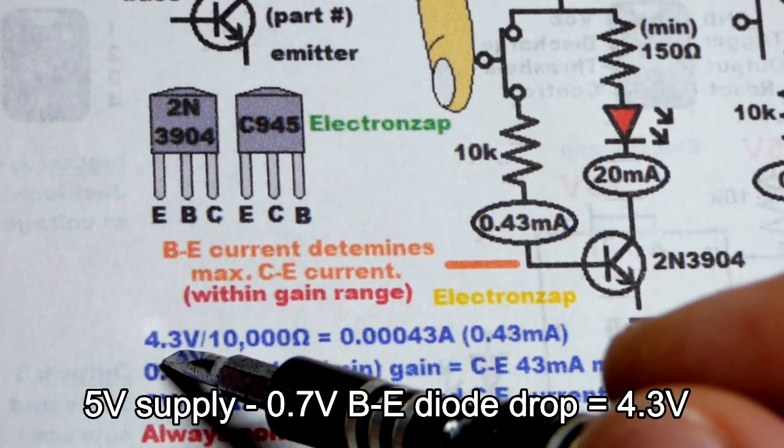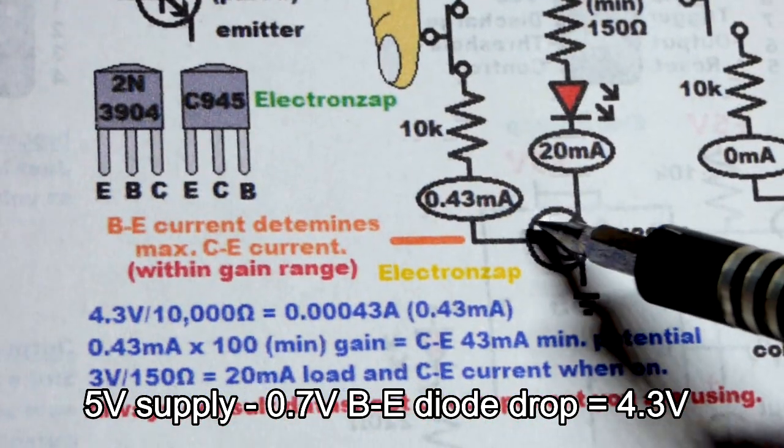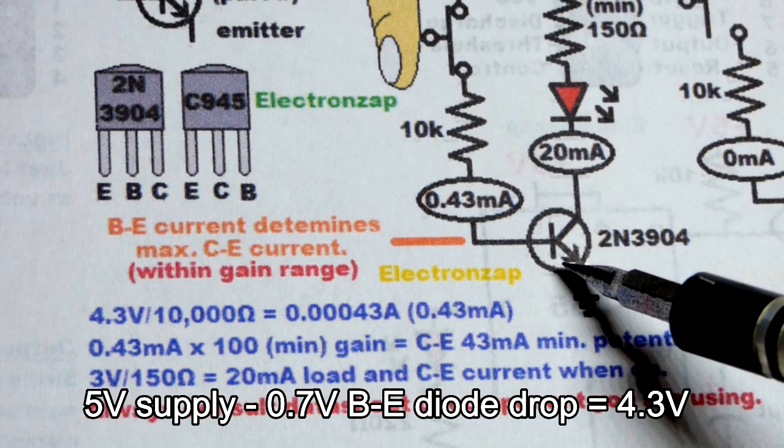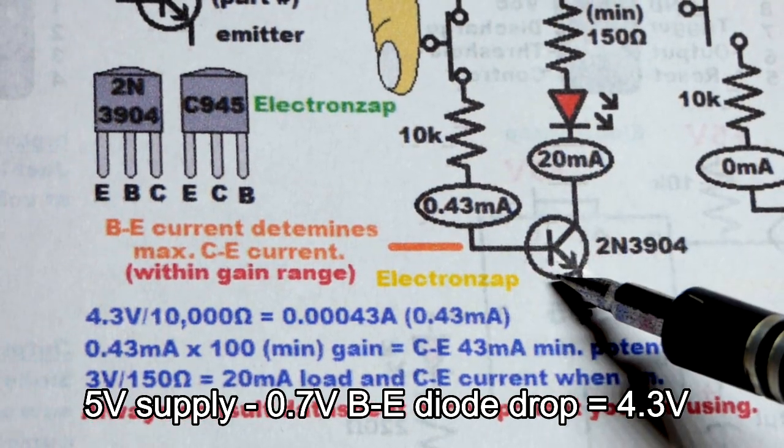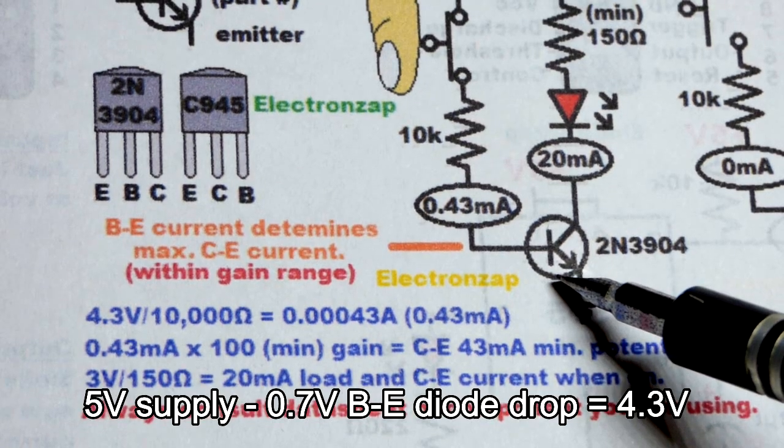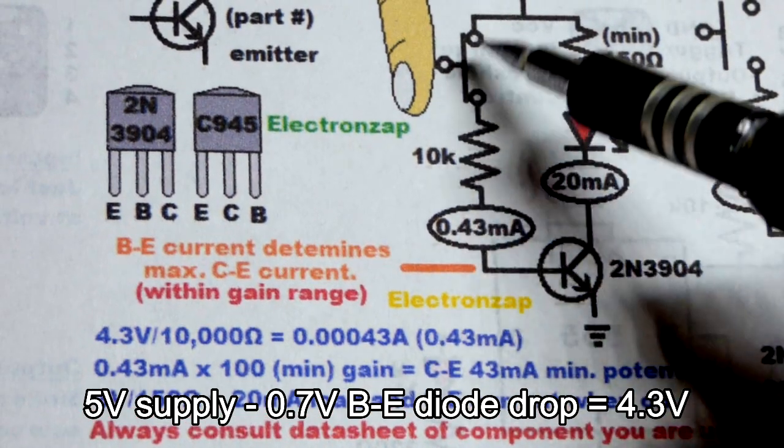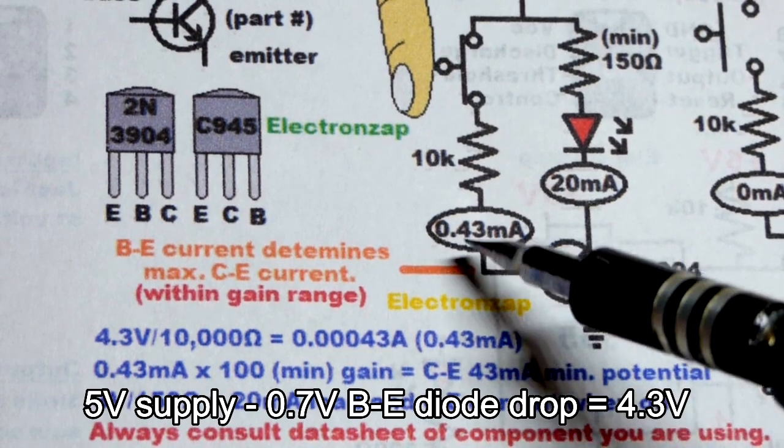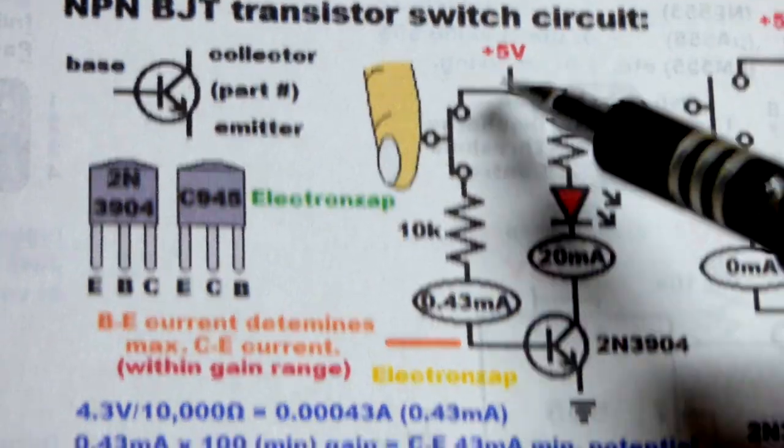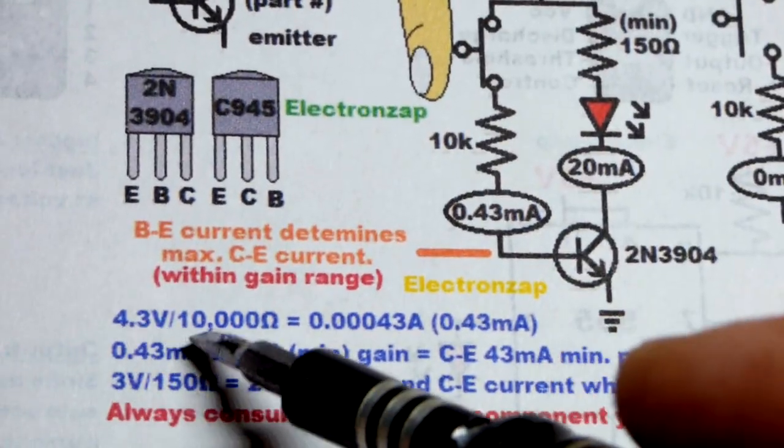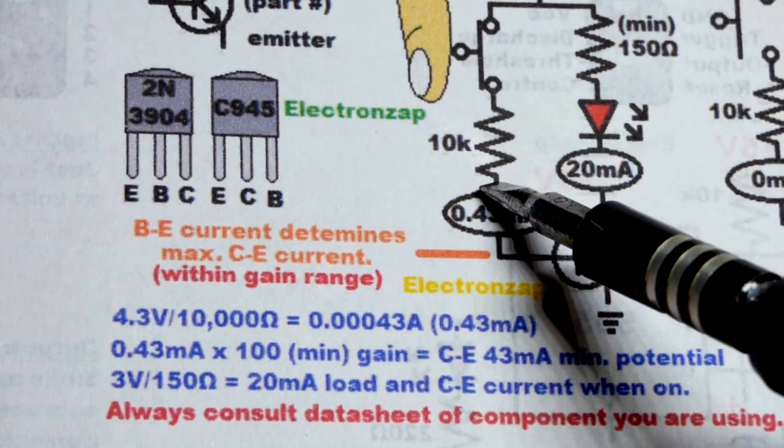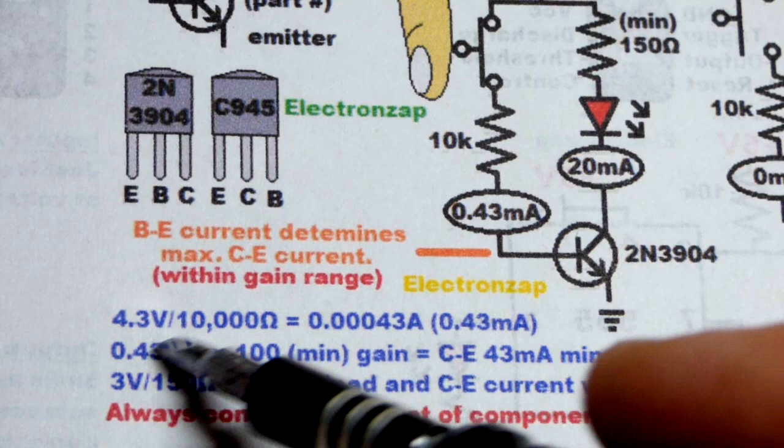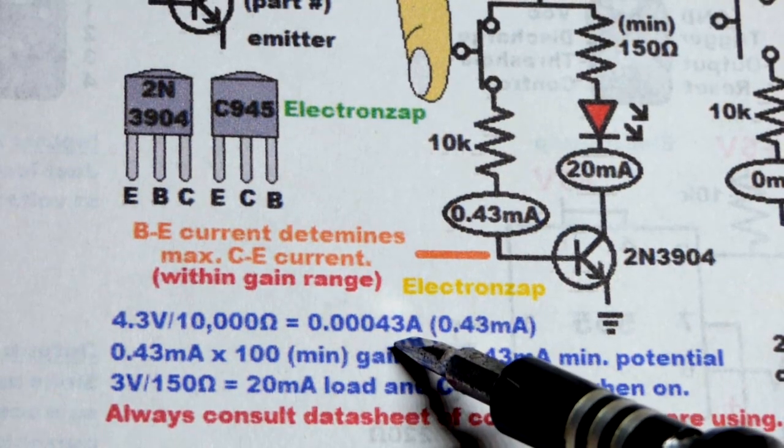You can see we got 4.3 volts. That's because the base to emitter is a diode right there, just like the LED. It drops some voltage. It's going to drop about 0.6, 0.7 volts from series components right there. And so out of 5 volts, that's going to leave us with 4.3 volts. And then we have that voltage across the resistor, which sets the current when the switch is closed. And we do the math there. And that's what we get.